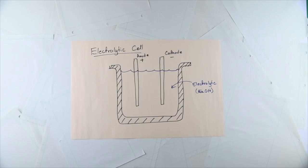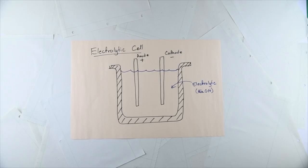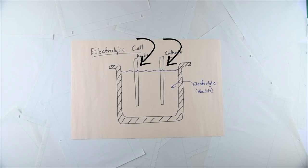Faraday referred to the substance that was to be electrochemically decomposed as the electrolyte, from electro, for electricity, and the Greek leitos, meaning loosed — saying once it had been decomposed, it was electrolyzed, or its atoms were electrically loosed from each other. He also called the parts providing the current for electrolysis the electrodes, for their electrical conductivity, but wasn't sure what to call them each individually.